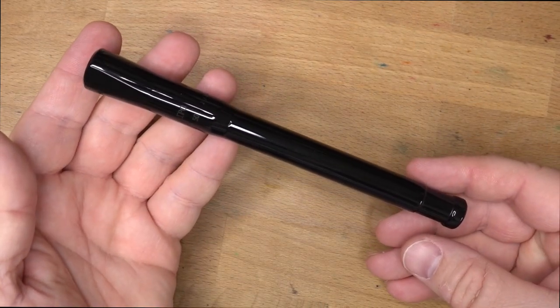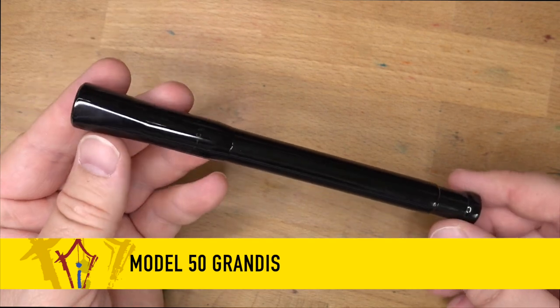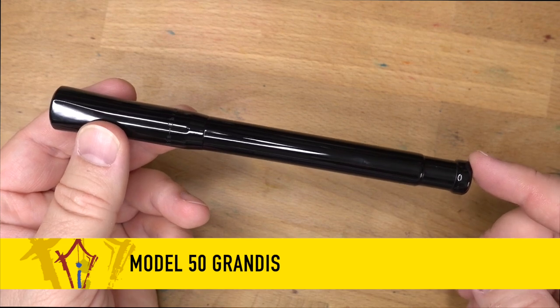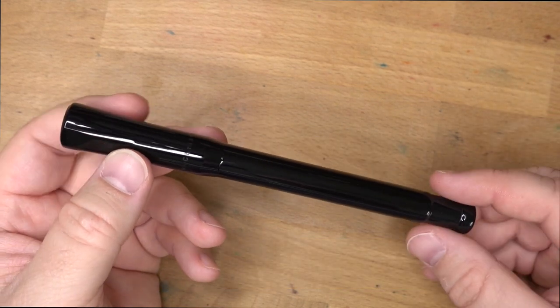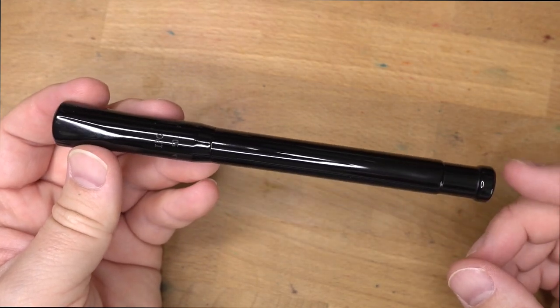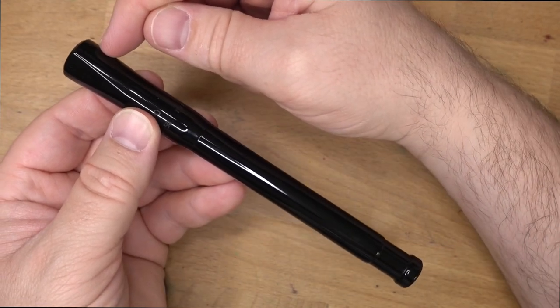Here is the pen. This is the Franklin Christoph Model 50 Grandis, and it's a big one. I don't have their other big pen, the Model 66, handy. I wish I did, but I don't have one of those. And this is bigger. Not a huge amount bigger. I'd say the 66 probably comes up to about here on this pen.